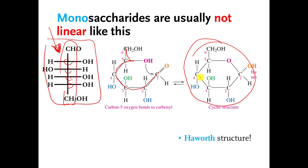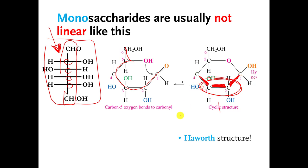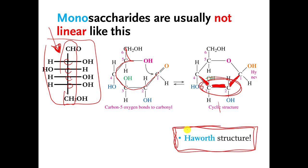Sometimes you will see monosaccharides drawn where the bottom bonds are thickened and written in a solid way. We've already talked about this a little bit — that means that this bottom part of the molecule, especially these two carbons, they're supposed to be pointing toward you in 3D. If you ever see those thickened bonds, let's call it the Haworth structure. I don't really care that you know that name, but I do care that you know what those thickened bonds are supposed to be showing you.